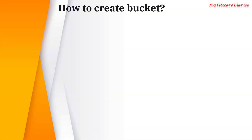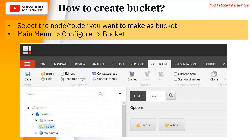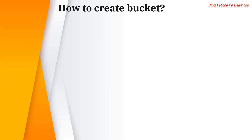Now, how to create an item bucket. Whatever node or folder you want to make into a bucket, select it and go to the main menu, then Configure, then Bucket. If you click on Bucket, it will convert that folder into a bucket. Next, how to add an item into the bucket.